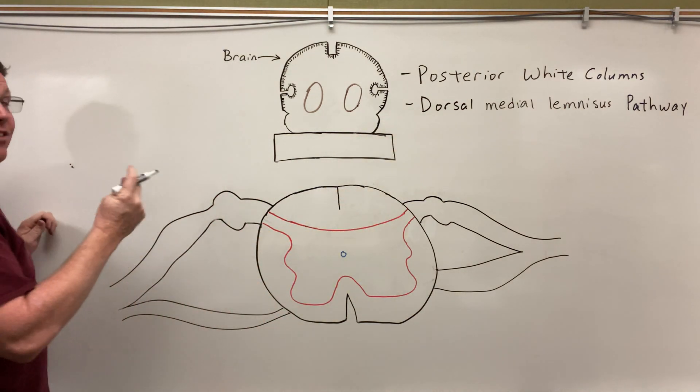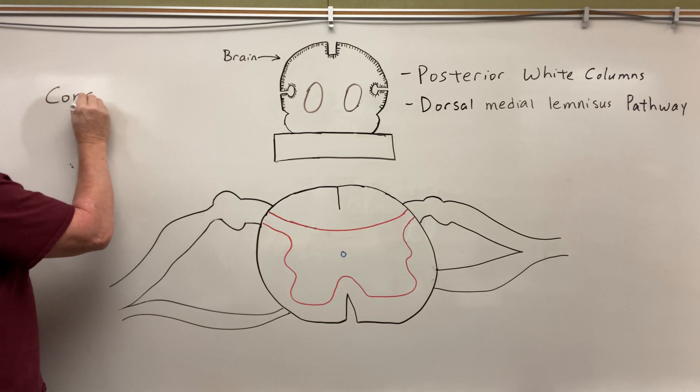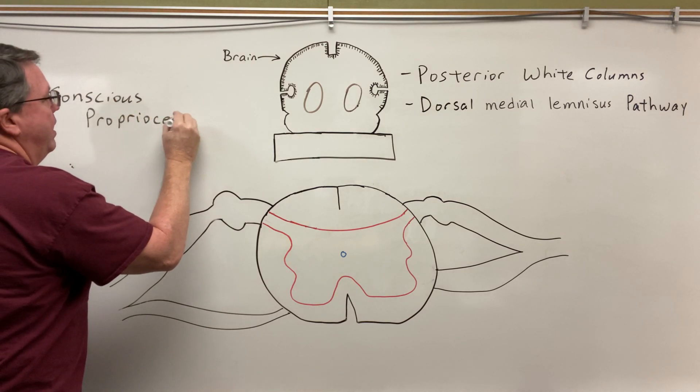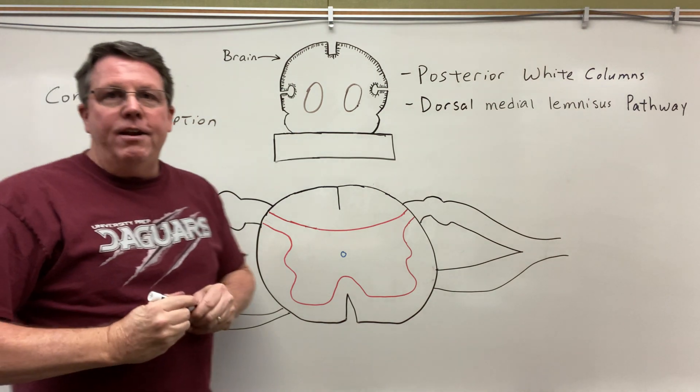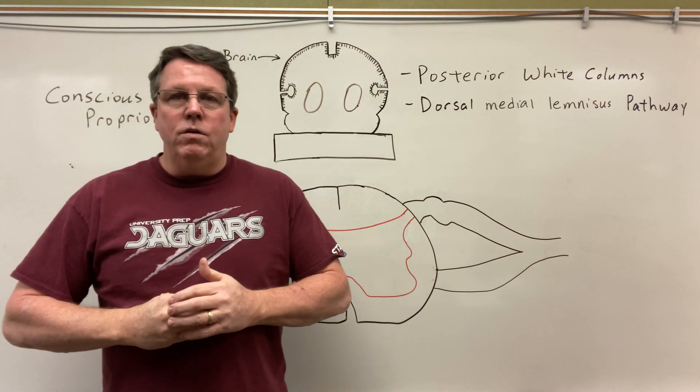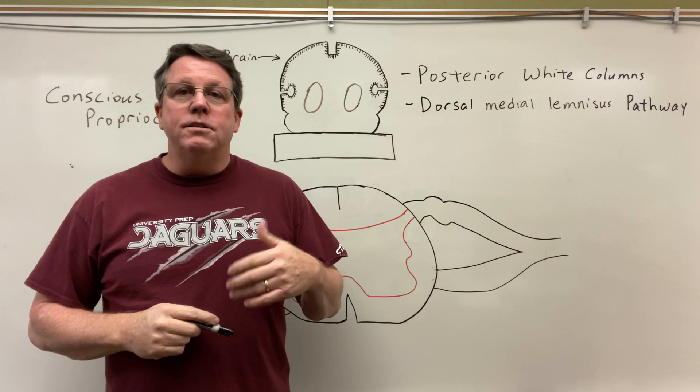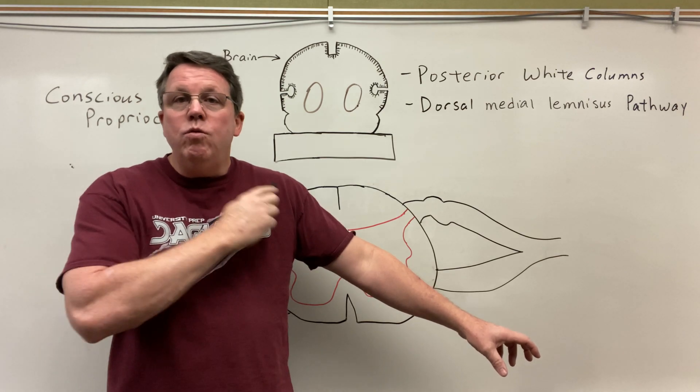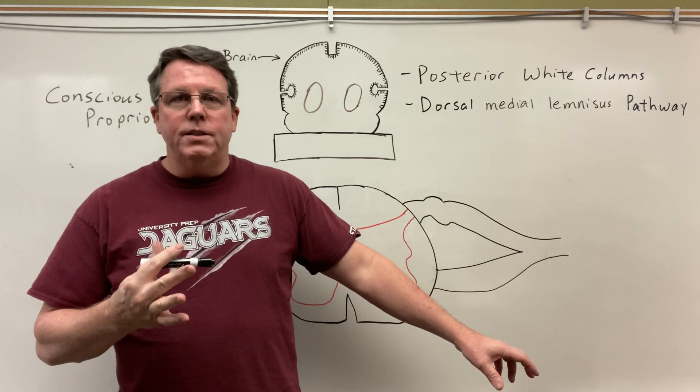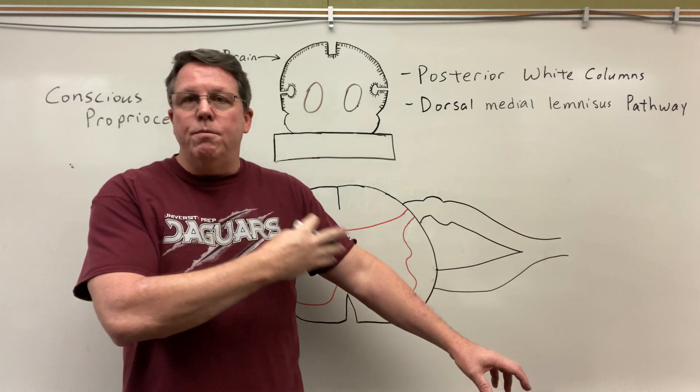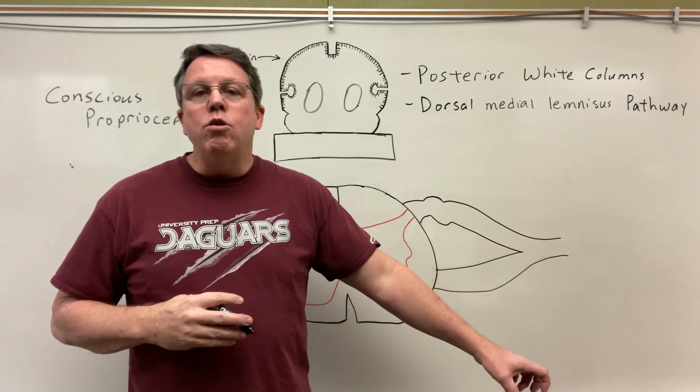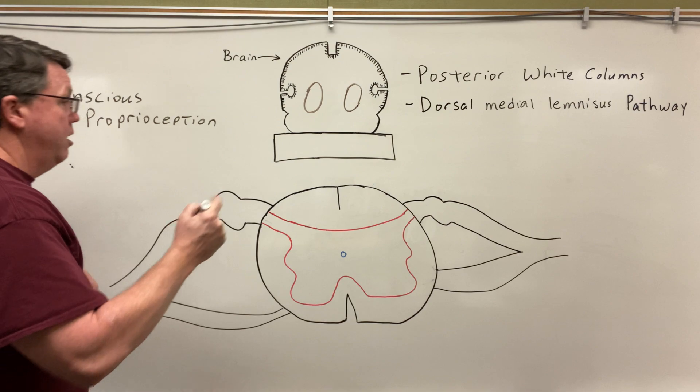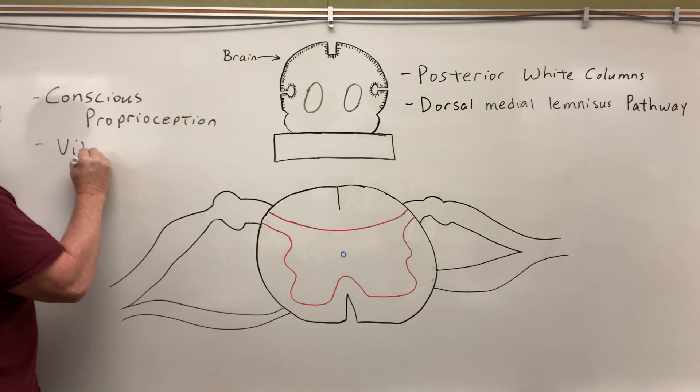So here's what the dorsal medial lemniscus pathway does. First off, it's going to do something called conscious proprioception. What I mean by that is let's say you're sitting at home and your cell phone is on the couch next to you and you're watching TV. Somebody calls and it starts to vibrate. So you reach over to get your cell phone. You know where your arm is in space. That's what proprioception is. It's your body's awareness or your awareness of where your body's position is in space. It also vibrates. That's another thing that's going to be carried by this pathway, the sense of vibration.